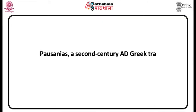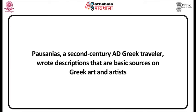Valuable bits of information can also be found in books by travelers and historians. Pausanias, a second century AD Greek traveler, wrote descriptions that are basic sources on Greek art and artists. Flavius Josephus, circa 37 to 100 CE, a historian of the Flavian period, wrote in his Jewish Wars a description of the Triumph of Titus that includes the treasure looted from the Temple of Solomon in Jerusalem.